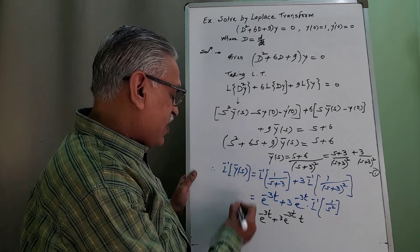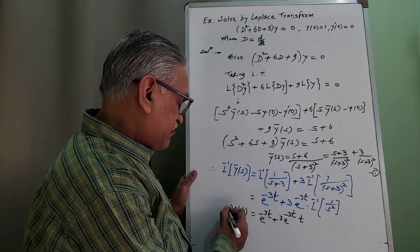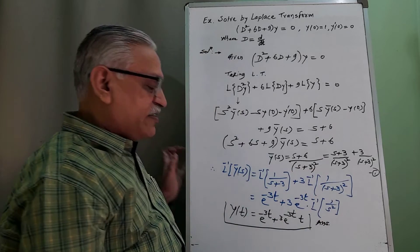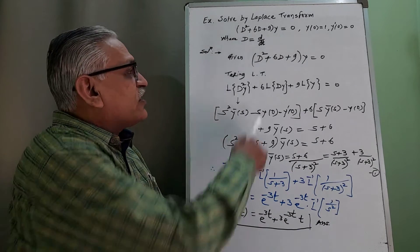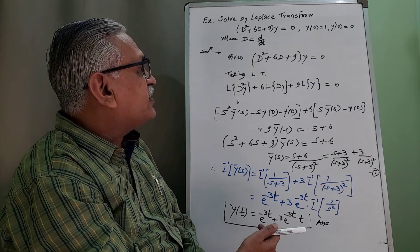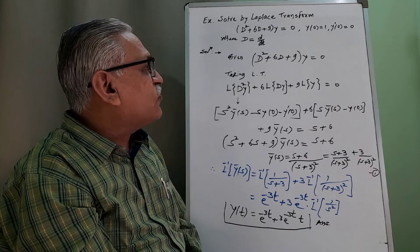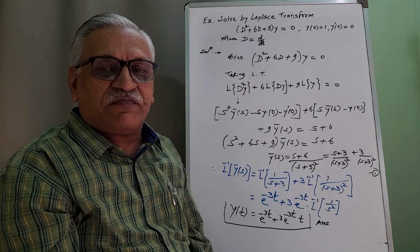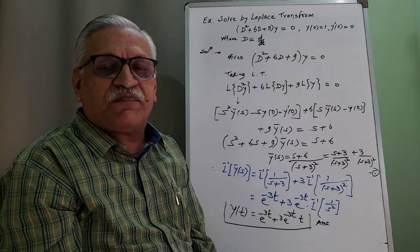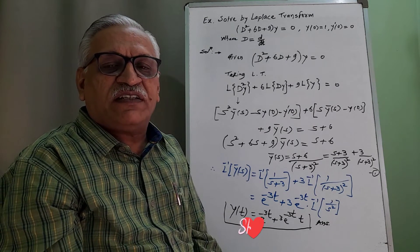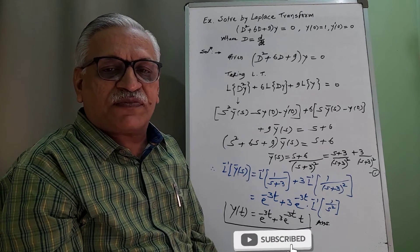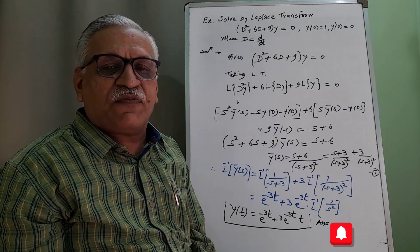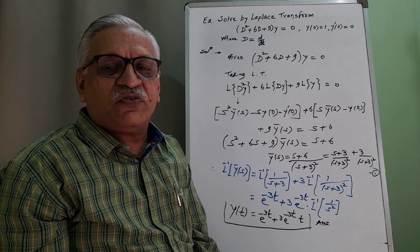Since the inverse Laplace of ȳ(s) is y(t), the required solution of the differential equation (D² + 6D + 9)y = 0 obtained by Laplace transform technique is y(t) = e^(−3t) + 3t·e^(−3t). I will discuss one more example in my next video. Please like, share, and subscribe to my channel and press the bell icon to receive notifications for all new videos. Thank you, thanks for watching.